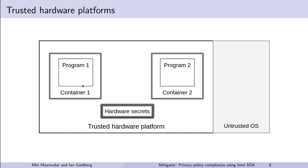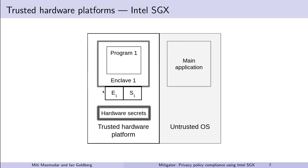In other words, we obtain confidentiality of the program state and integrity of the program. There are several implementations of trusted hardware platforms, such as Intel SGX, AMD SCV, ARM TrustZone, and others. In this work, we focus on SGX based on its attestation features that I will describe shortly. However, our design can be implemented on other platforms as well.